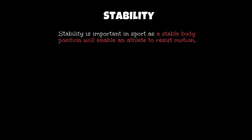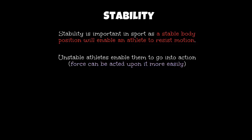Stability is another area where you need to have extensive notes. Having a stable body position will enable an athlete to resist motion — remember, motion is force against an object. If we're in a good stable body position, we can resist force pushing against us. However, if you're unstable, force pushing against you will cause the athlete to fall over, or what we call go into action. If somebody pushes you while you're balancing on one leg, that initial force is going to make you tip over — you are unstable, you've fallen over, you're out of balance. When you are unstable, force can be acted upon more easily.